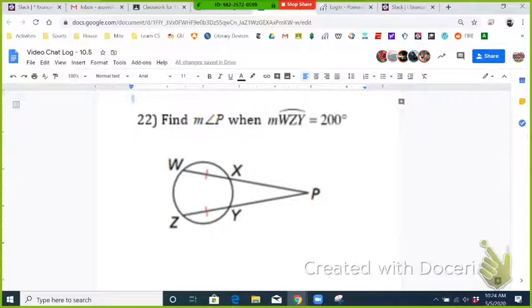Okay, in problem 22, we have to find angle P, and we know that arc WZY is 200 degrees.